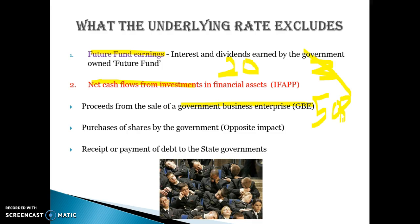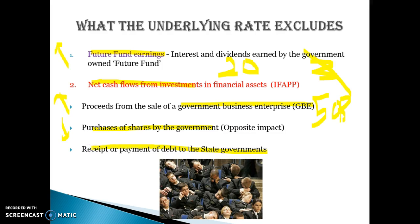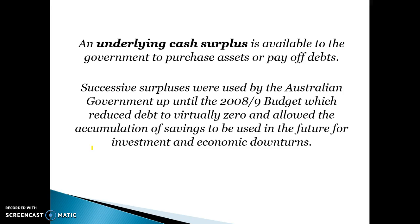Any purchases of shares by the government will also cost the government money. Future fund earnings and GBE sales increase the headline rate, while share purchases decrease it, but all are excluded in the underlying outcome. Any repayment of debt to state governments, or any financial relationship with state governments where they're paying each other, would get excluded as well.